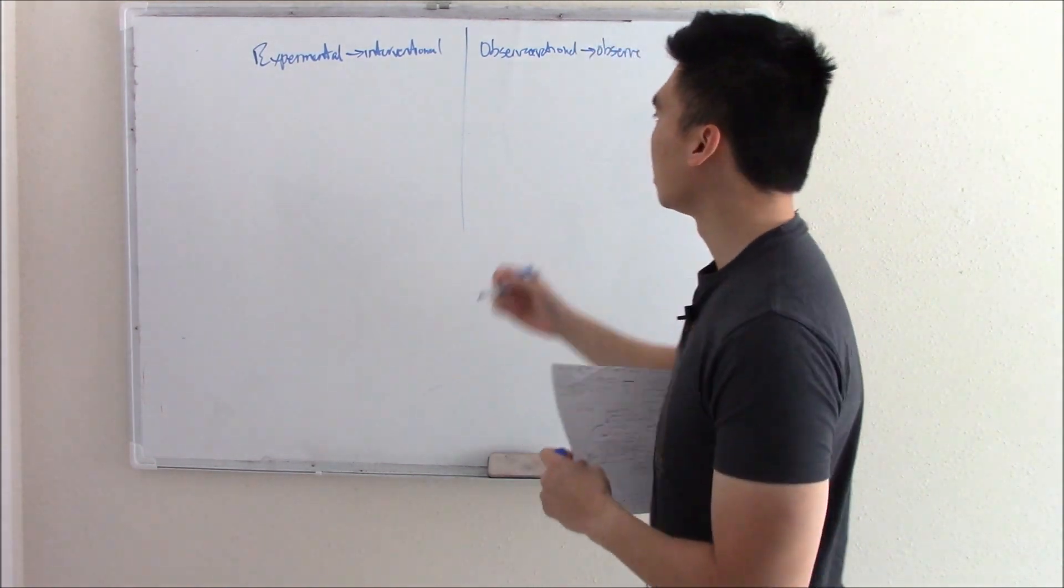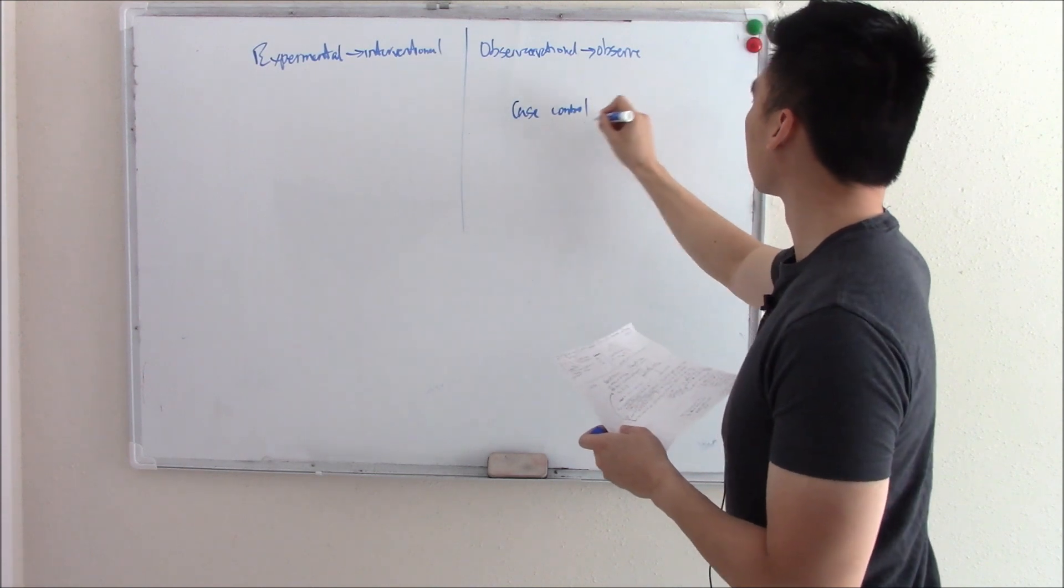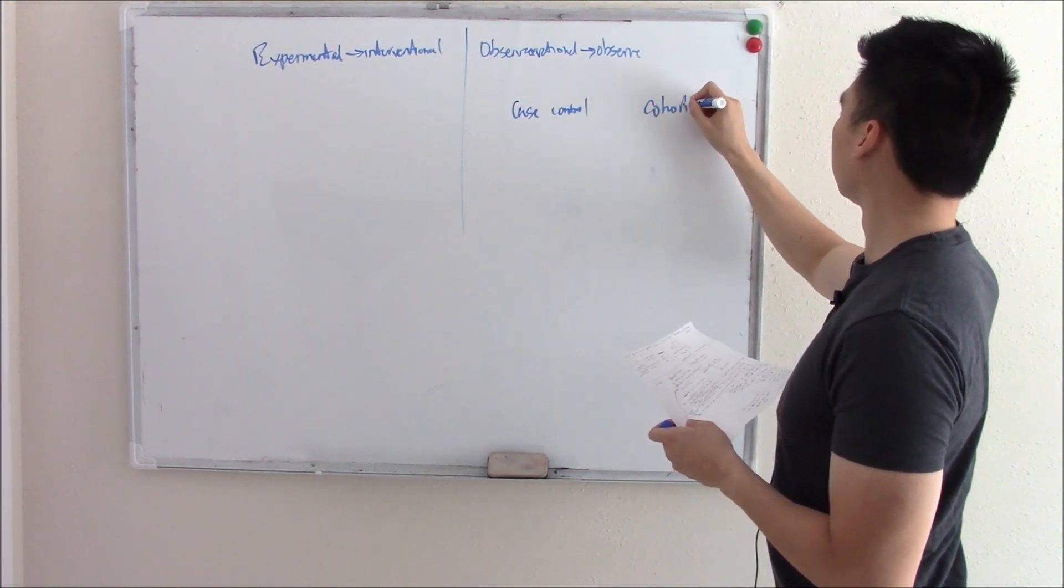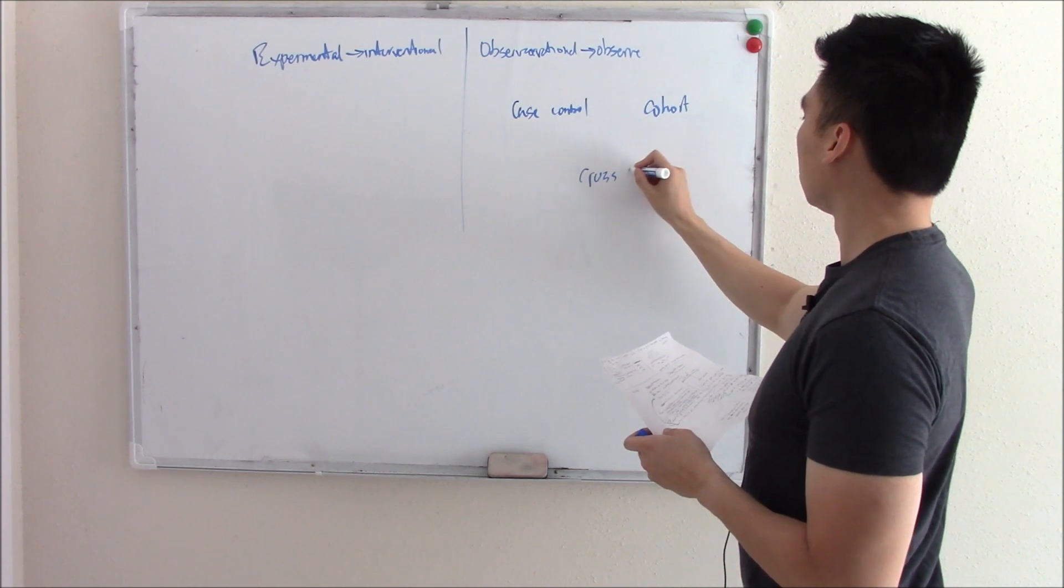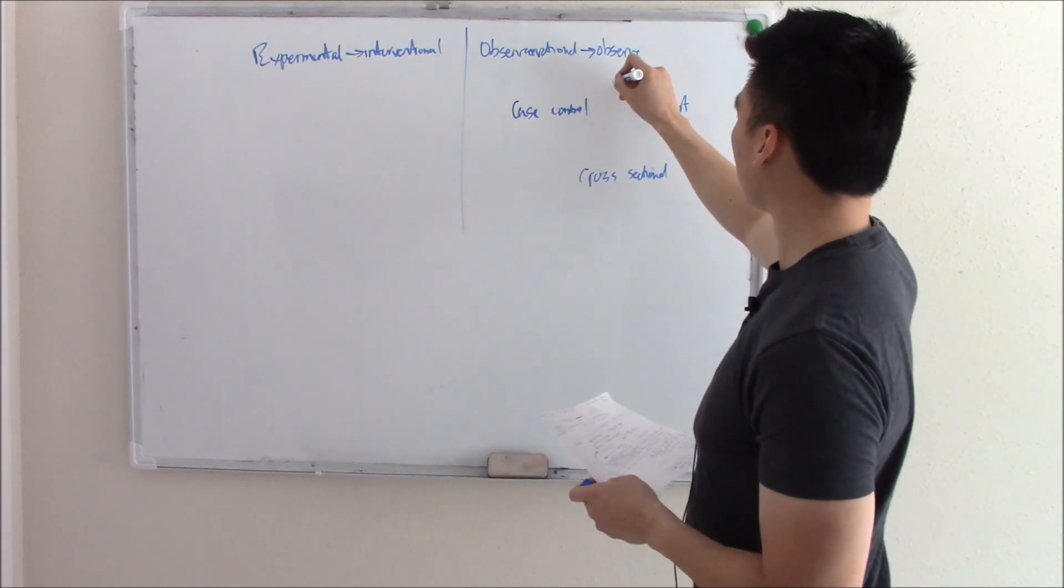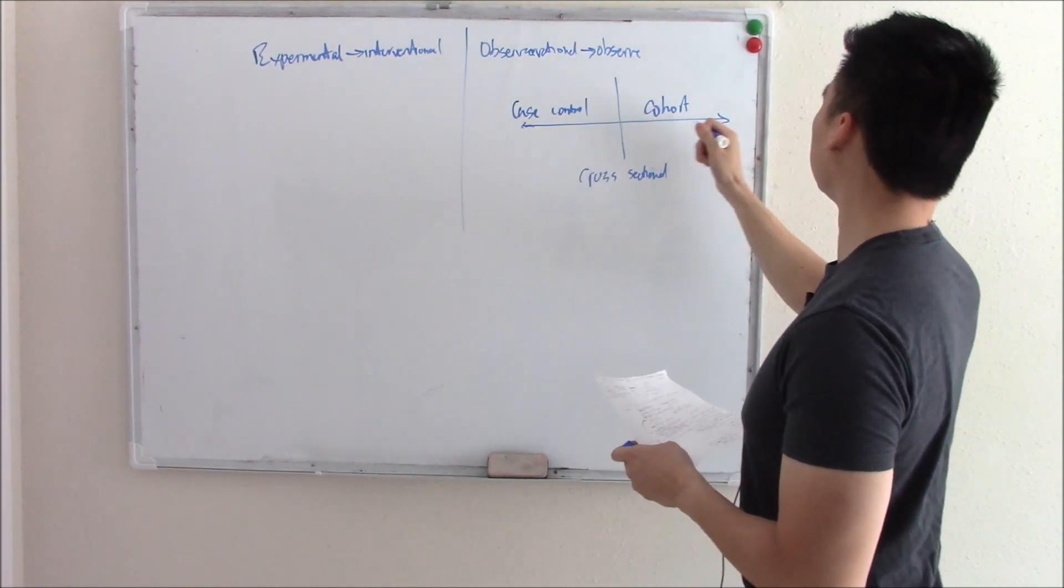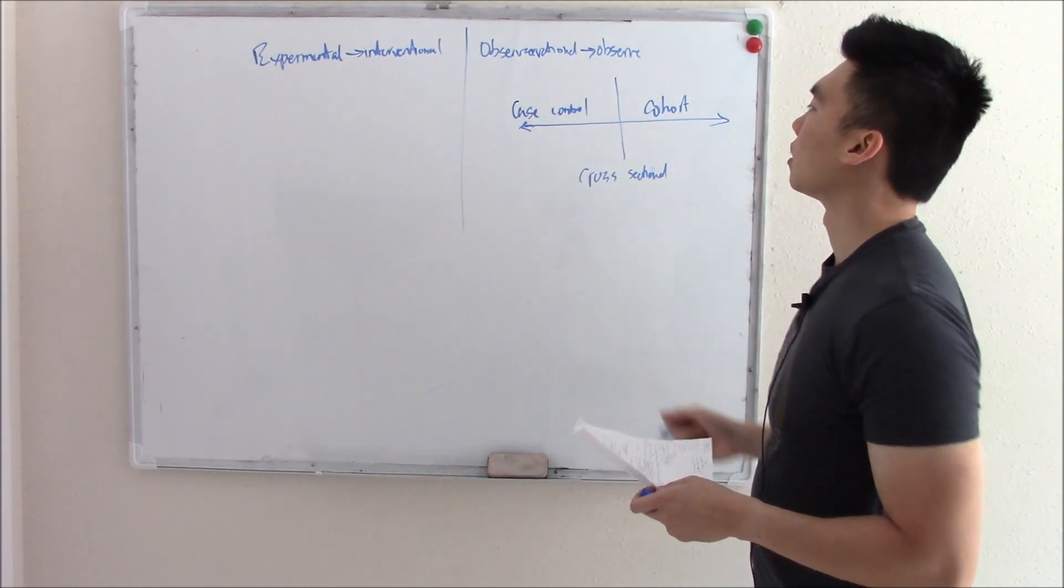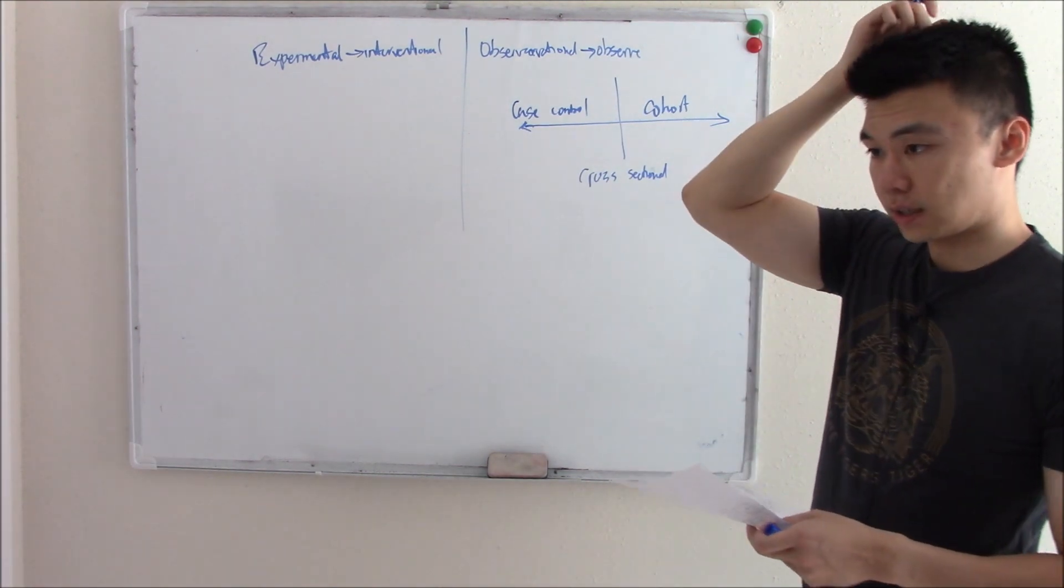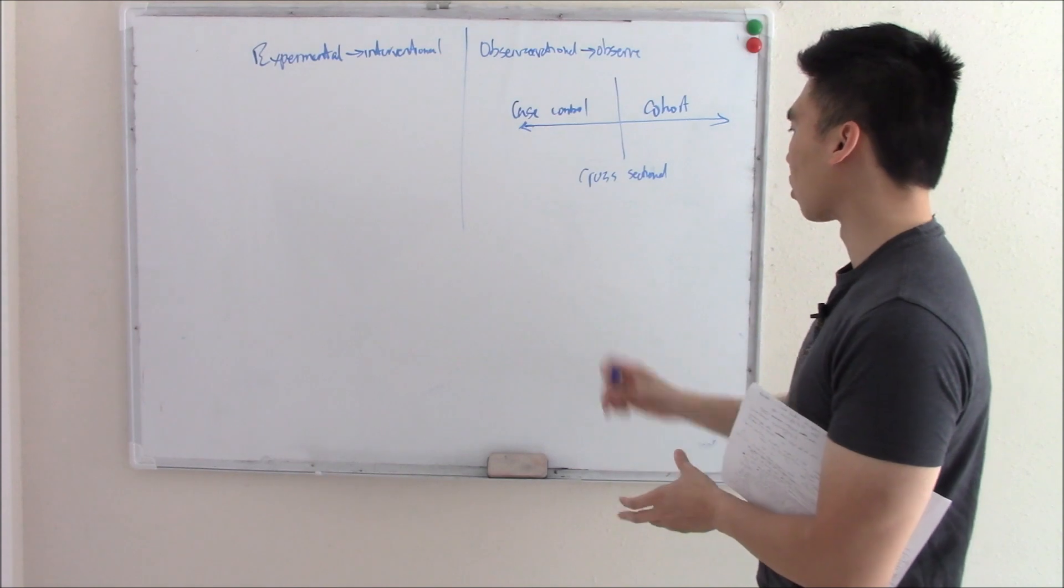There are three types. There is case control, there's cohort studies, and then there is cross-sectional. A great diagram I found online drew it as kind of an arrow, a timeline. And I'll show you why this is such a great picture in a second. But first let's talk about cohort studies.